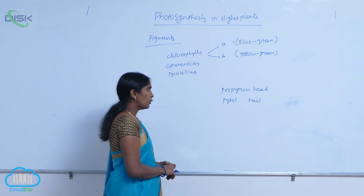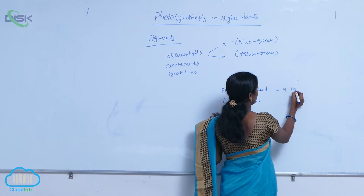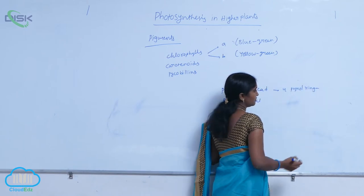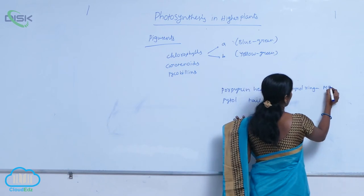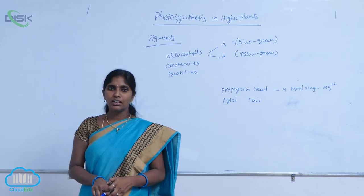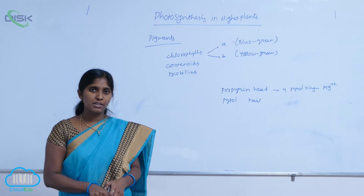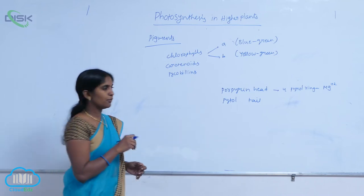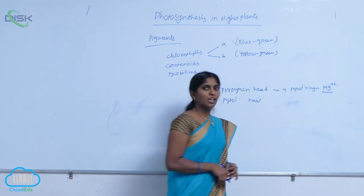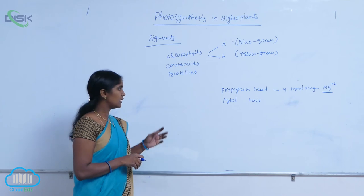The porphyrin head is constructed with four pyrrole rings. At the head center, Mg²⁺ ion is present. What is the element present in the chlorophyll synthesis? What is the core factor present in the chlorophyll? That is Mg²⁺ ion. So the Mg²⁺ is located in the center of the head, that is porphyrin.